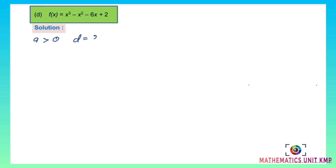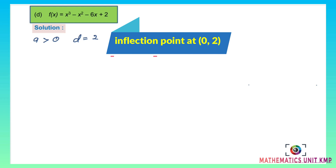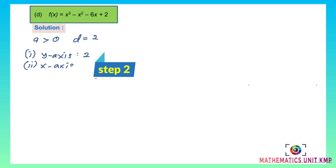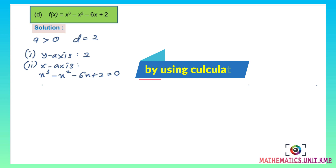To sketch the cubic graph, first determine the y-intercept, which is at 2. To find the x-intercepts, solve x³ minus x² minus 6x plus 2 equals 0 using a calculator. The values are x₁ equals negative 2.2, x₂ equals 0.3, and x₃ equals 2.9.